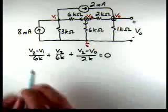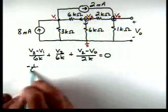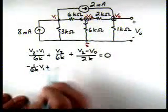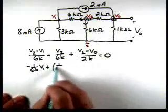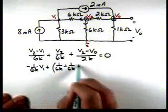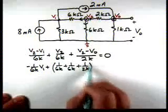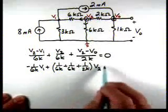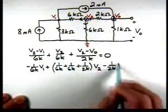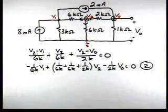Let's simplify it. So now we have minus 1 over 6K times V1. We have 1 over 6K plus 1 over 6K plus 1 over 2K times V2 minus 1 over 2K times V0. So there's our second equation.